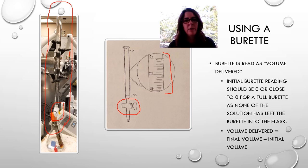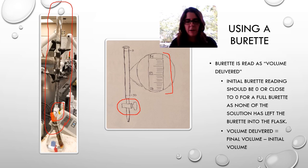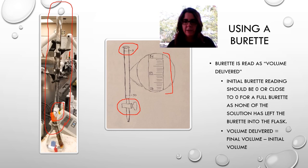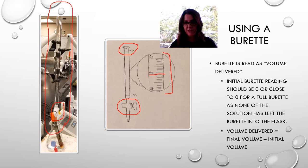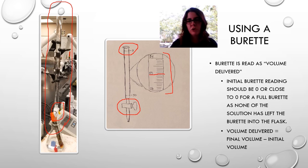One important thing when using a burette: we're reading volume delivered, not volume remaining. When the burette is full, the reading should be very close to zero — zero is at the top. That means zero milliliters have been delivered. If it stopped at 25, that means 25 milliliters were delivered. To calculate the volume delivered, take the final volume reading and subtract the initial.